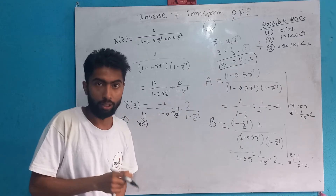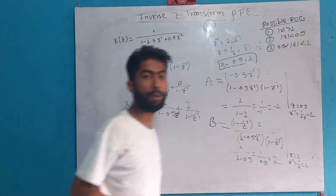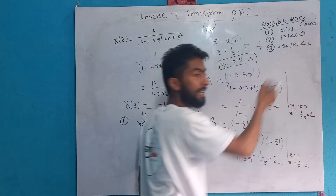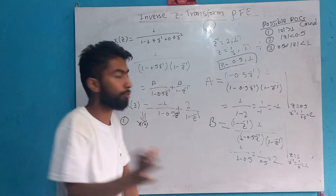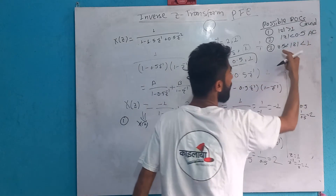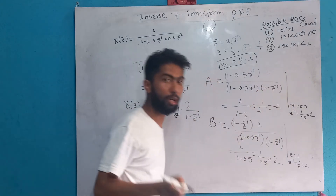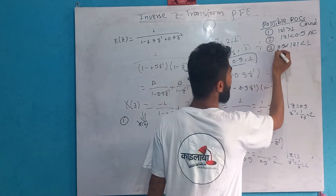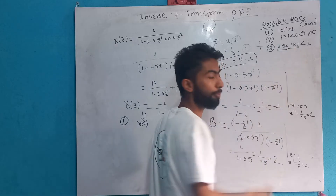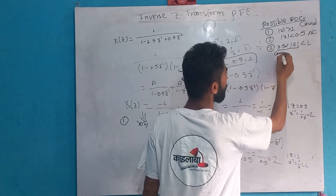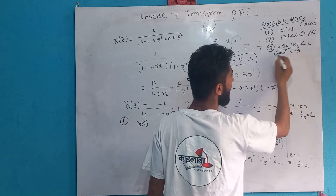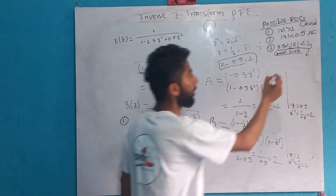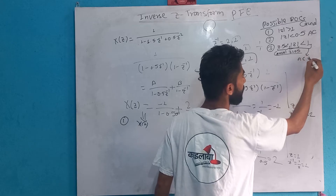So let's say: if |z| is greater than 1, that is the causal signal. And |z| less than 0.5 — that is anti-causal. In between, there are two parts: if one part is causal and one part is anti-causal, it will be non-causal. So for |z| greater than 0.5 — causal. For |z| less than 1 — anti-causal.